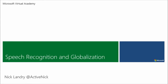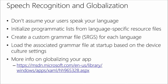A couple of quick notes on speech recognition and globalization — taking your app across the world to different countries and languages. First, don't assume your users speak your language. If you're using programmatic lists, put them inside language-specific resource files. By putting your English lists into an English US resource file and then separate files for German, French, Italian, Spanish, and so on, loading the proper resources will give your programmatic list the correct strings for recognition.